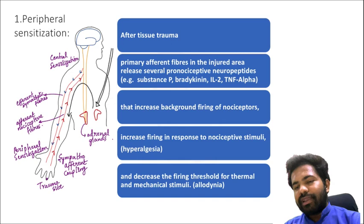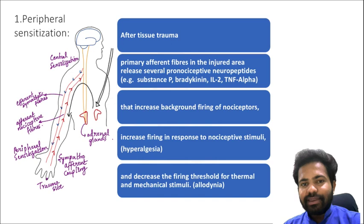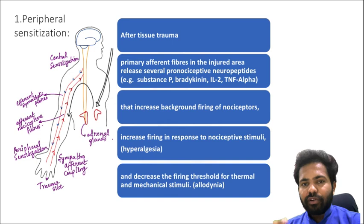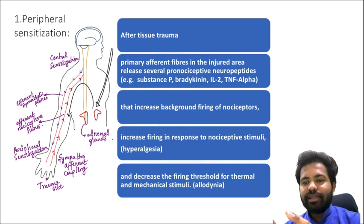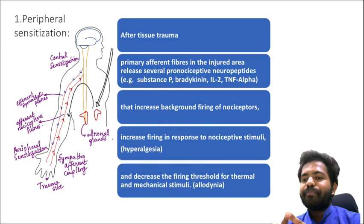Regarding peripheral sensitization: after tissue trauma, the primary afferent pain fibers in the injured area release several pro-inflammatory neuropeptides like substance P, bradykinin, interleukin-2, interleukin-5, and tumor necrosis factor TNF-alpha. This causes increased background firing of the nociceptors. As shown in the diagram, the trauma site is in the finger — afferents go to the spinal cord, then to the brain, then efferents return and the person experiences pain. This is known as peripheral sensitization.